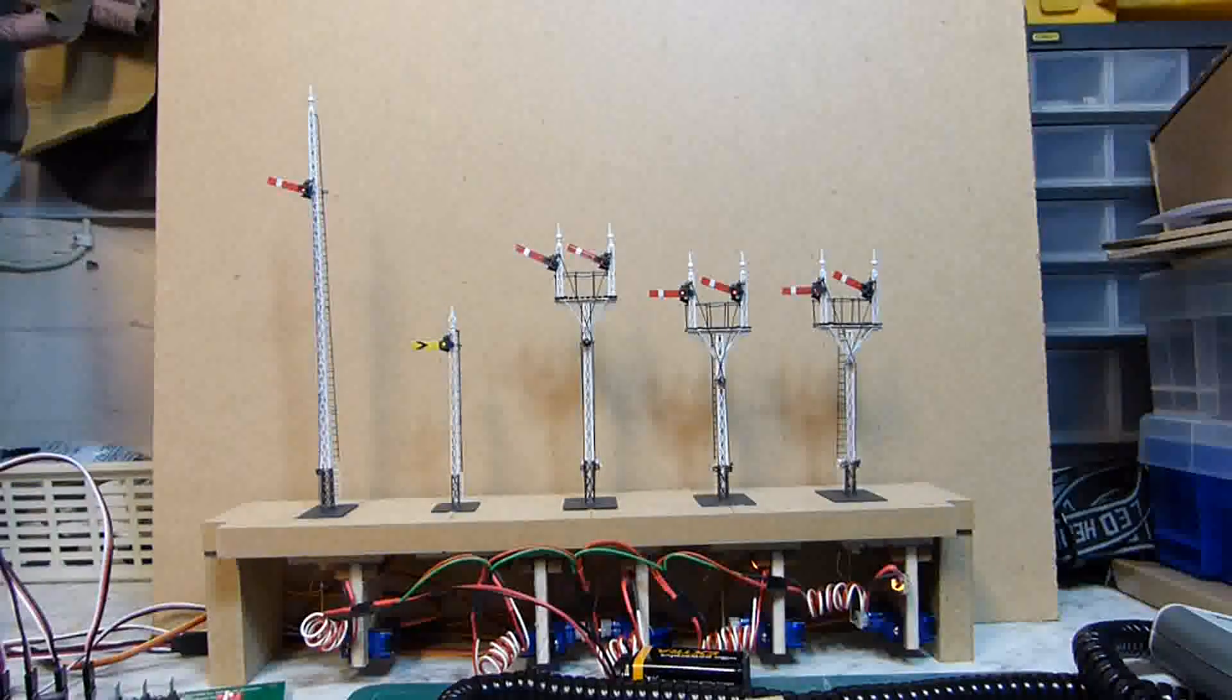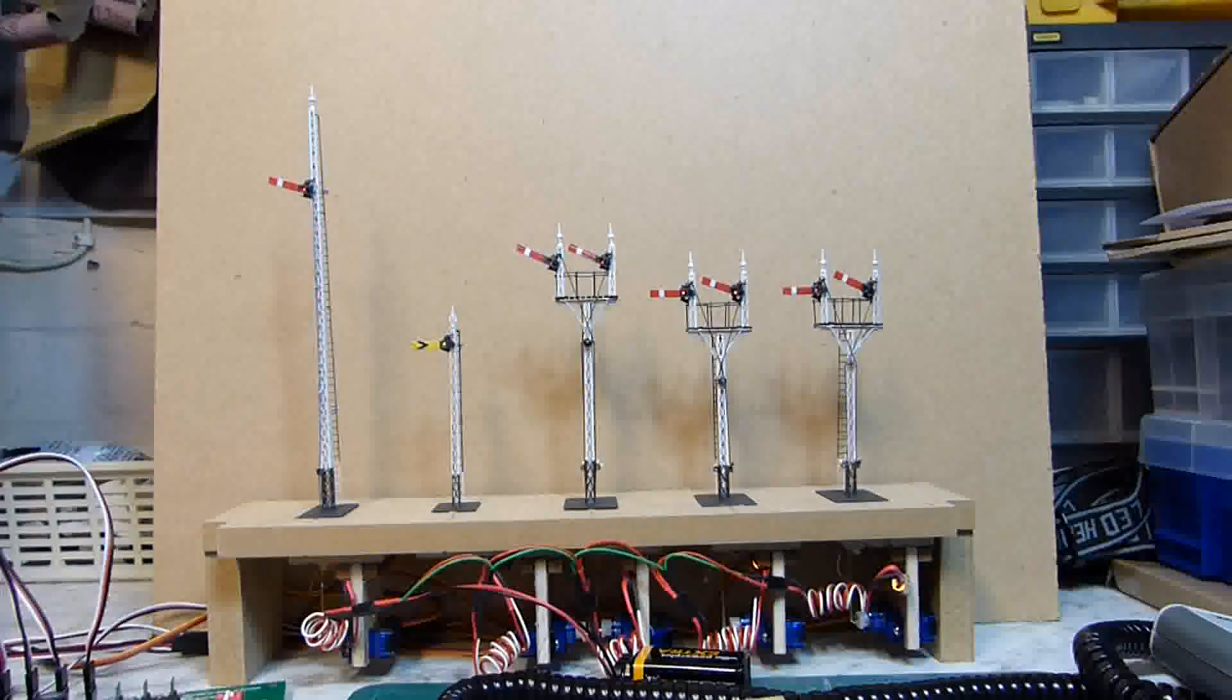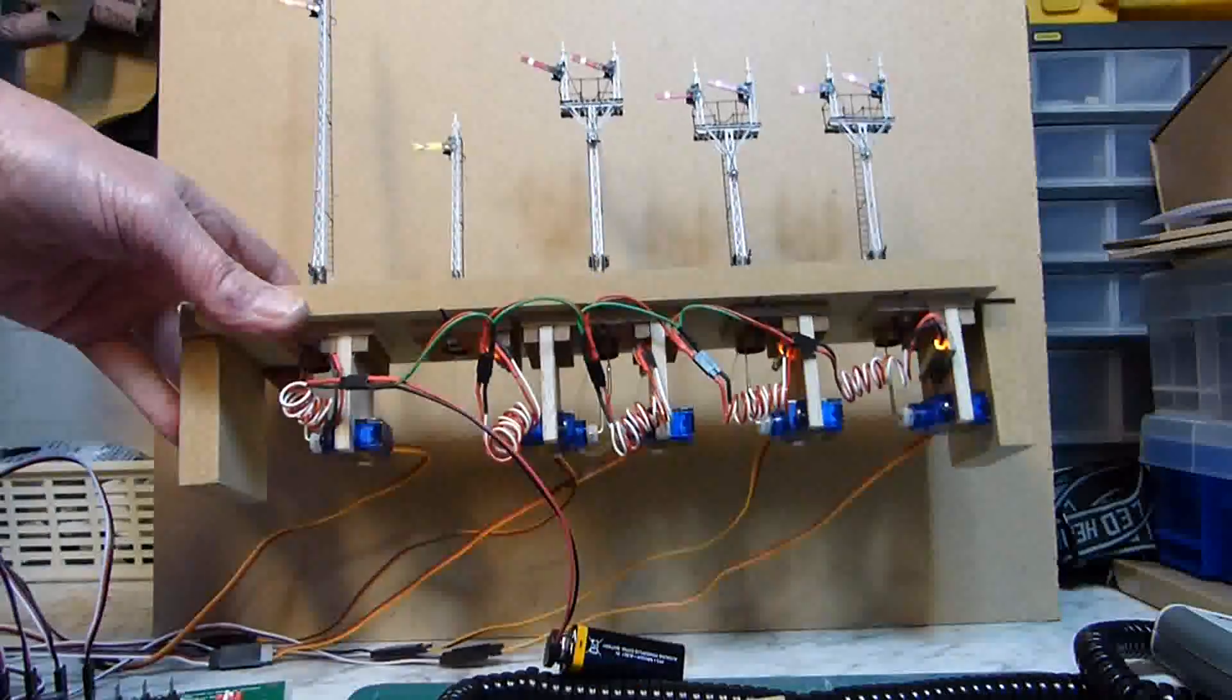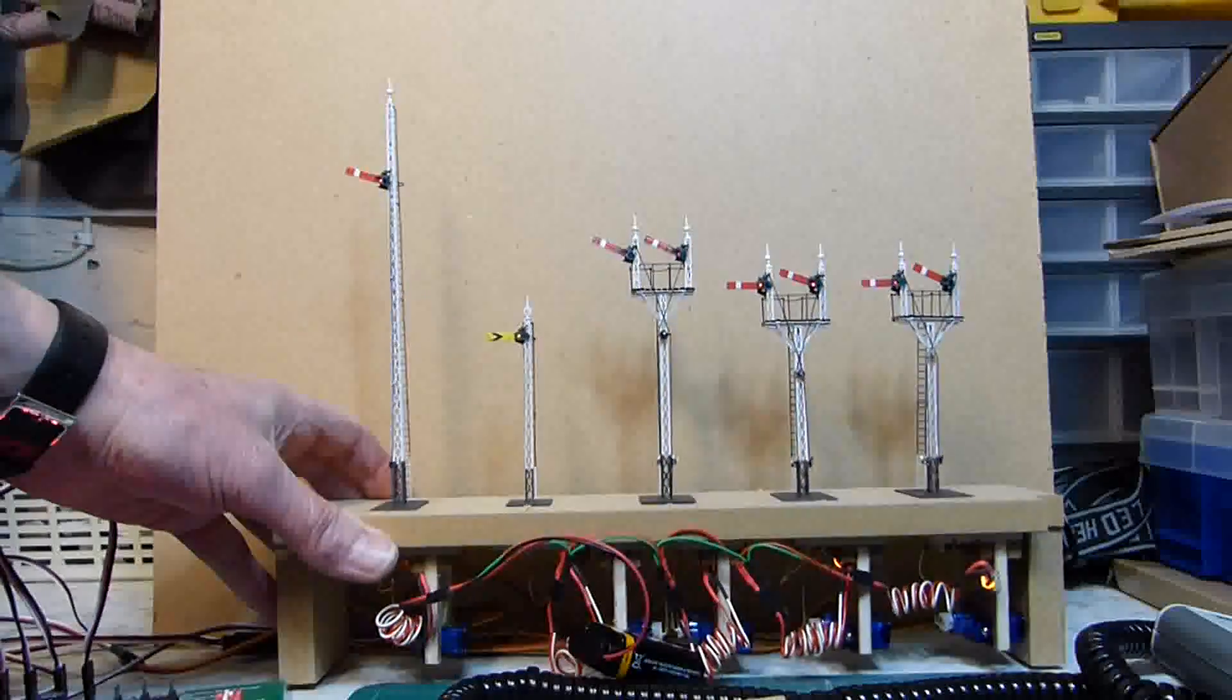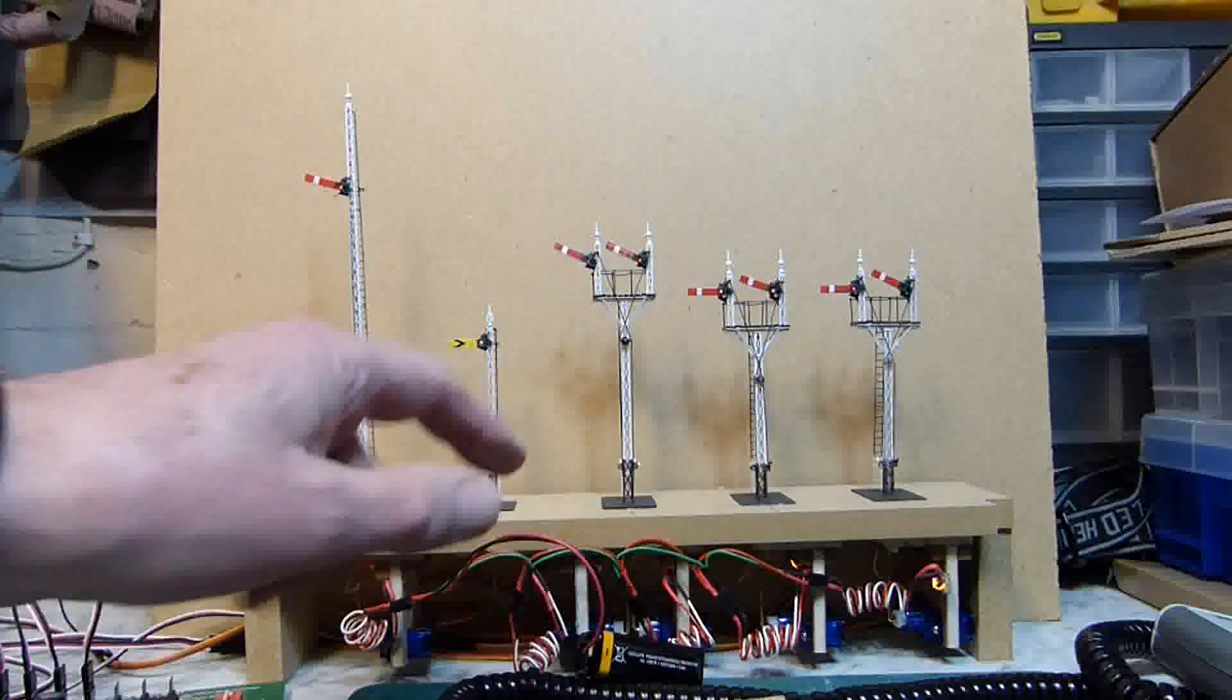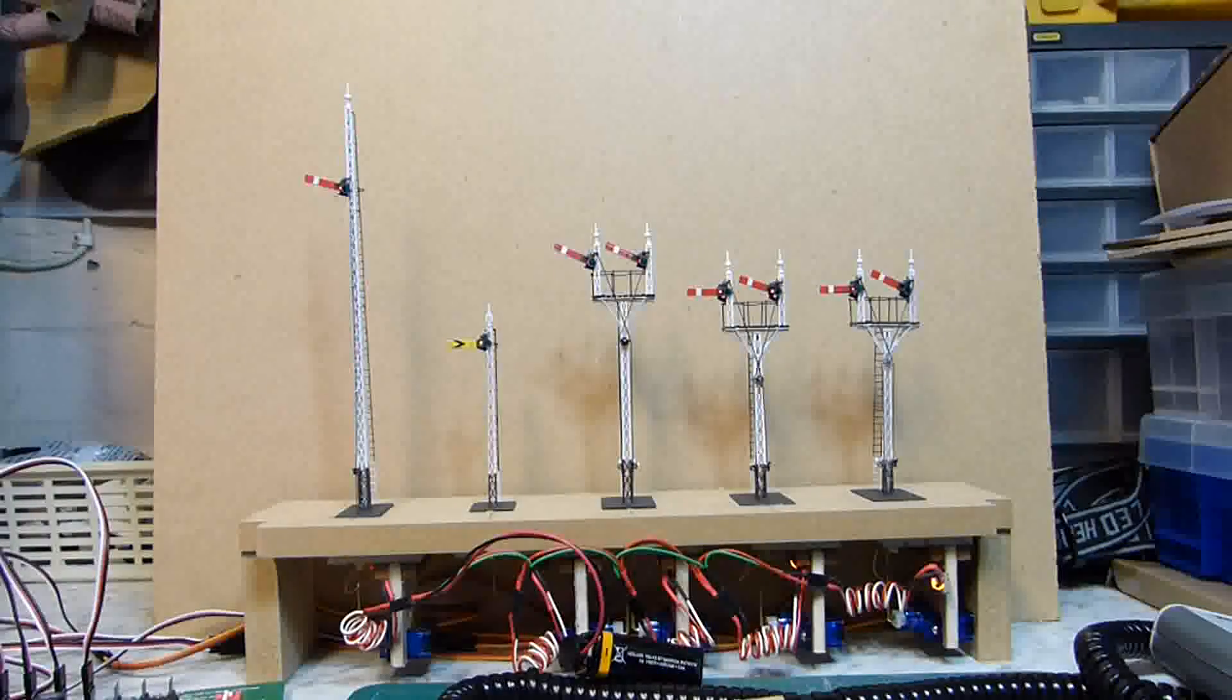The signals are mounted on a little frame on which they'll be transported and that represents the way that they'll be installed eventually on the layout. The servos are mounted underneath and you may be able to see them in there. The lights that you can see are LEDs driven by a 9 volt battery and the light from those passes up to the signal lamps through fiber optics.